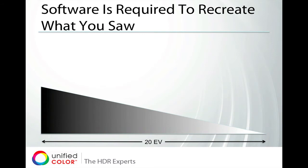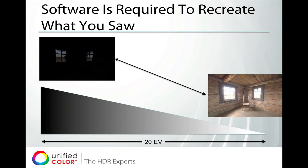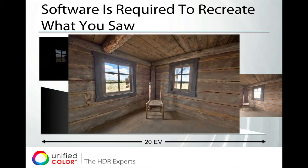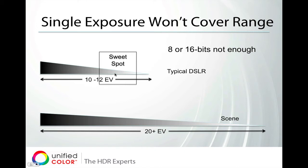So we need software to recreate what you saw on the scene. We capture several images from the brightest highlights down to the deepest shadows and merge them into one image that compresses the scene and gives you both in one shot. A single exposure just will not cover the range — if you have a typical digital SLR that's 10 to 12 EV but a much higher dynamic range scene, you're not going to be able to get that all with one shot. So we use multiple shots and identify the sweet spot in each frame, where you have low noise and the most differentiation in your gradations.